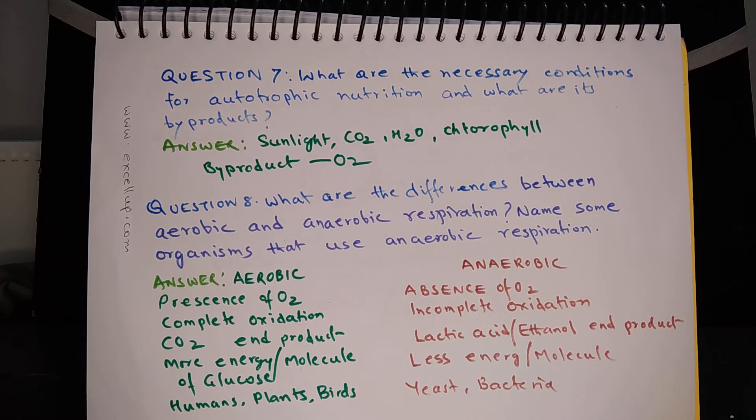Question 8: What are the differences between aerobic and anaerobic respiration? Name some organisms that use anaerobic respiration. In case of aerobic respiration, it takes place in presence of oxygen, and that is why this is called aerobic respiration. Anaerobic respiration takes place in absence of oxygen. Complete oxidation of glucose takes place in aerobic respiration, but in case of anaerobic respiration, that is incomplete oxidation of glucose.